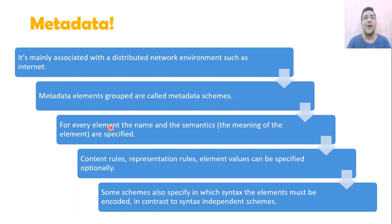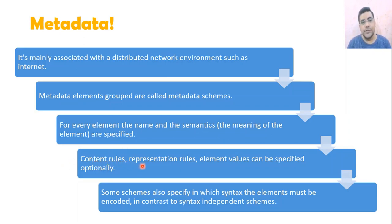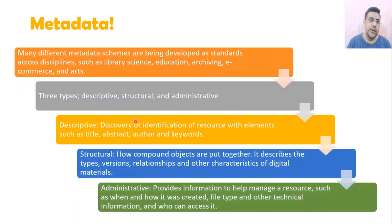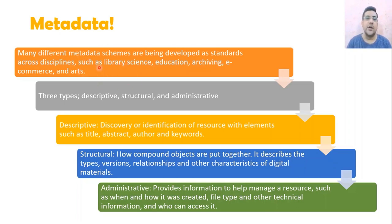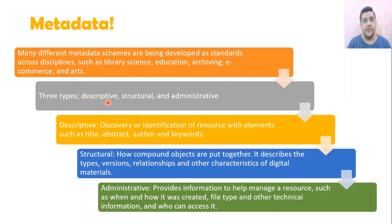Metadata elements grouped together are called metadata schemes. The name and semantics — meaning the meanings of the elements — are specified, along with content rules, representation rules, and element values, which can be specified optionally. Many different metadata schemes have been developed as standards across disciplines such as library science, education, archiving, e-commerce, and the arts.